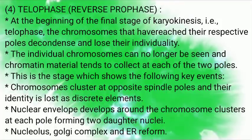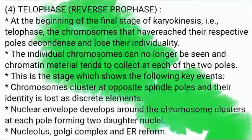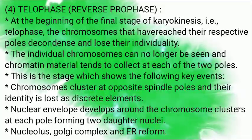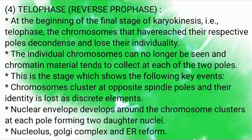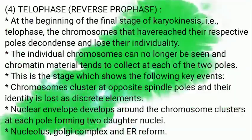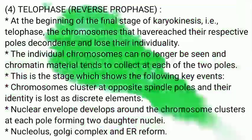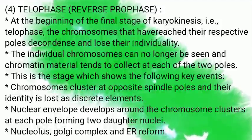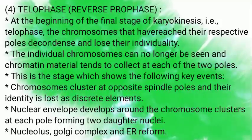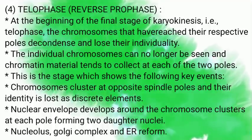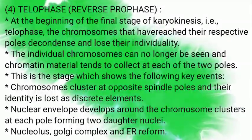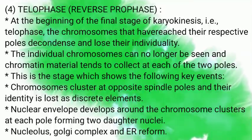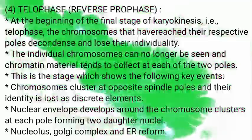At the beginning of the final stage of karyokinesis, which is telophase, the chromosomes that have reached their respective poles decondense and lose their individuality. The individual chromosomes can no longer be seen, and chromatin material tends to collect at each of the two poles. Chromosome clusters at opposite spindle poles and their identity is lost as discrete elements. Nuclear envelopes develop around the chromosome clusters at each pole, forming two daughter nuclei.